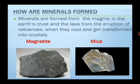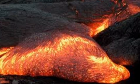Minerals are formed from the magma in the earth's crust and the lava from the eruption of volcanoes, and get transformed into crystal. Magma is a molten material from inside the earth that hardens to form rock. Lava is magma that reaches the surface to form rock when it cools and hardens on the surface.